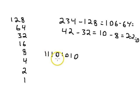So now we have 1, 1, 1, 0, 1, 0, 1, 0. And that is 234 in binary.